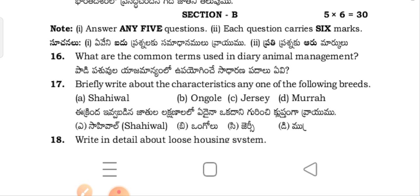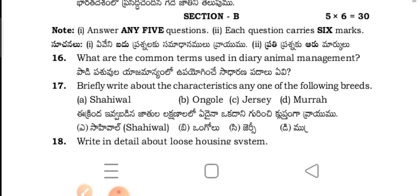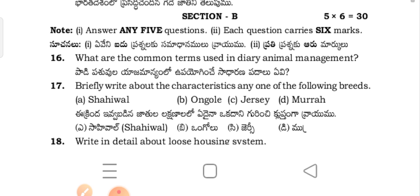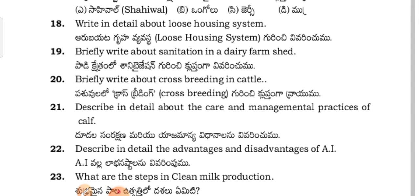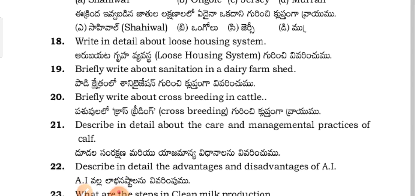Moving to Section B — answer any five of the following questions, each question carries six marks. What are the common terms used in dairy animal management? Name and identify breeds including Sahiwal, Ongole, Jersey, and Murrah. Write in detail about the loose housing system. Briefly write about the pharmacy sanitation of a dairy farm.